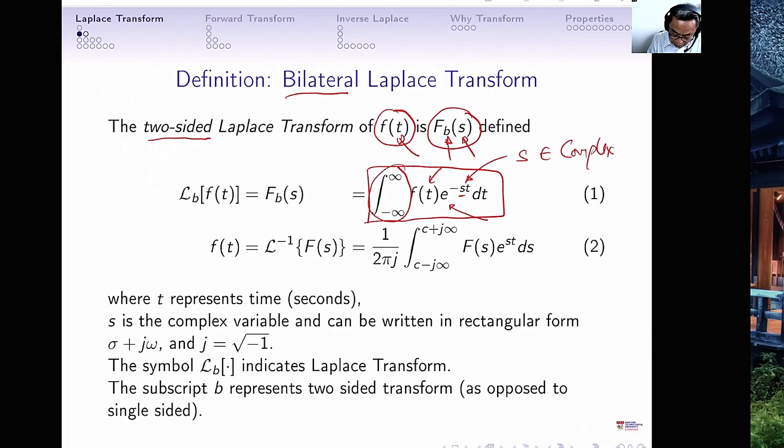The notation commonly used is this, F_b(s), to remind us that b is bilateral, or sometimes we use this notation, the nice font ℒ_b, to denote Laplace transform bilateral, with the input f(t).